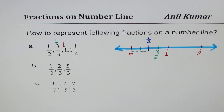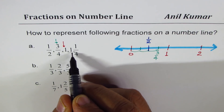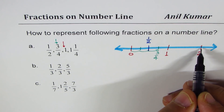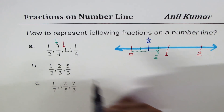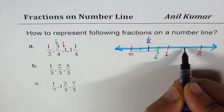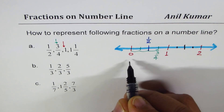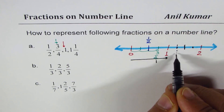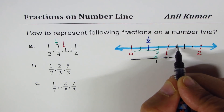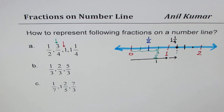Now let's look at the last number, which is 1 whole and 1/4. This number is somewhere between 1 and 2. We reach 1 whole, and now for 1/4 we divide the segment from 1 to 2 into four equal parts. So 1 and 1/4 is one fourth past the 1 mark. That is how you mark mixed numbers on a number line.